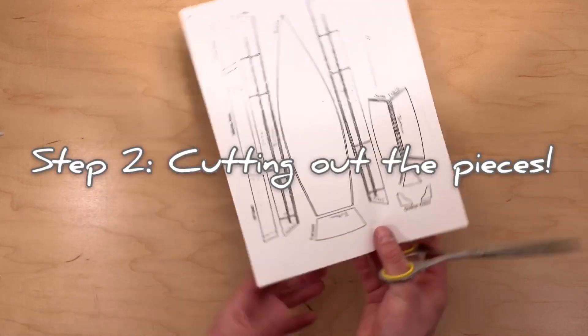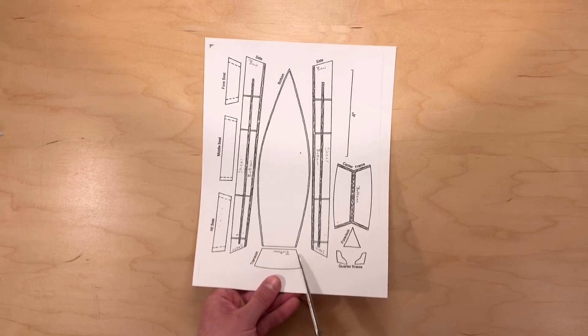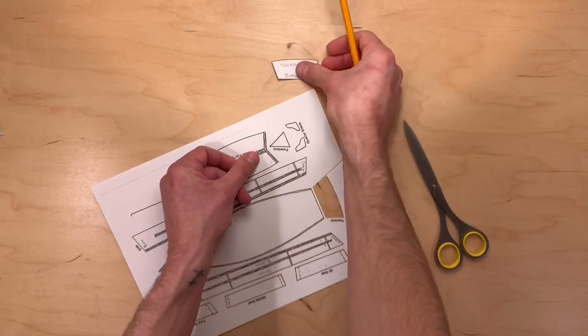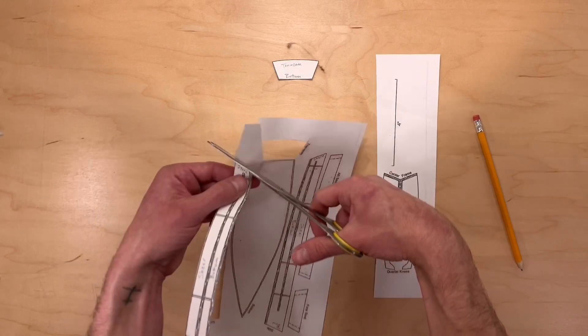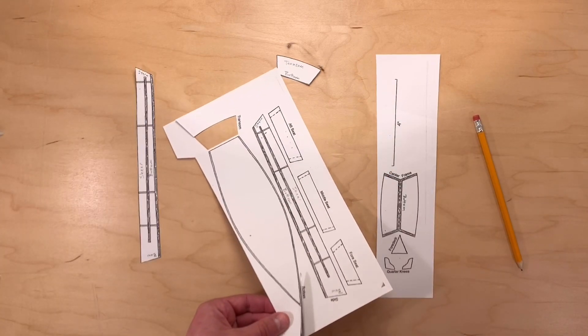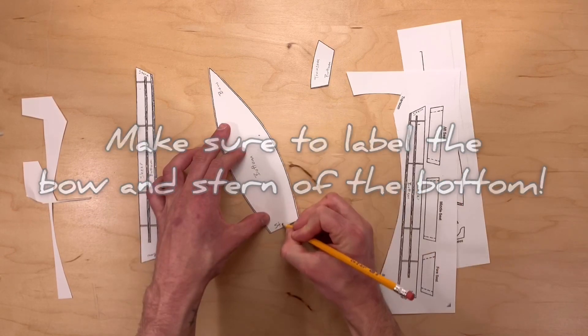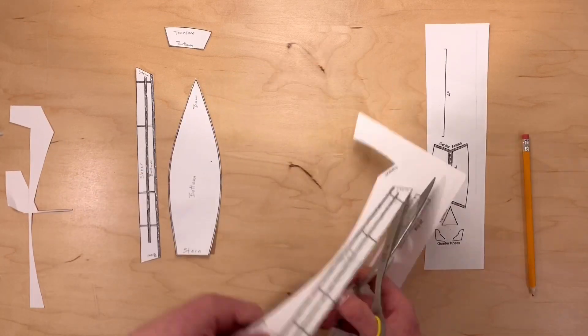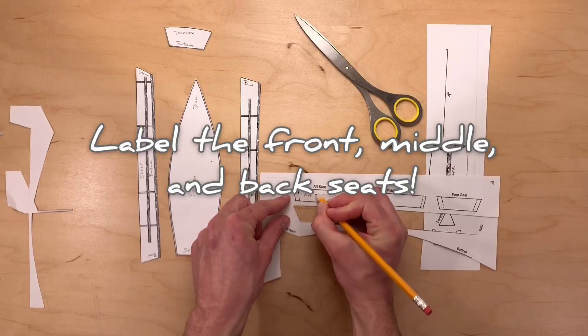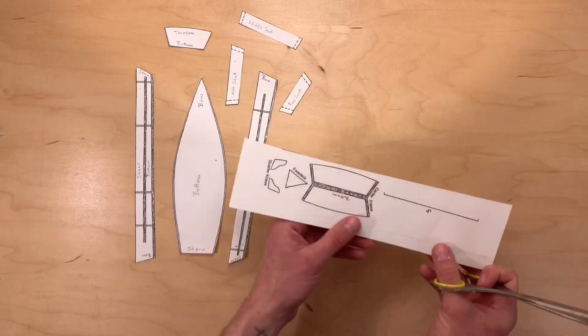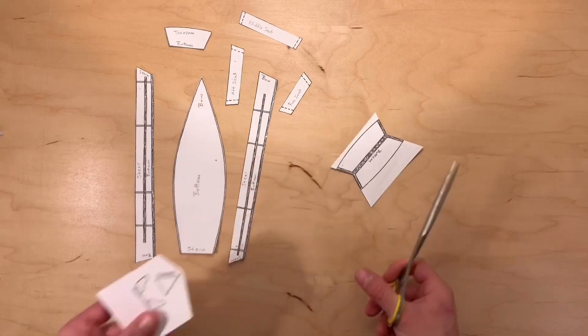Once the pieces are labeled, the next step is to cut them out. In boat building or in any woodworking project, there's the old adage to measure twice and cut once. This is because if we measure incorrectly and make the wrong cut, we might accidentally take off too much wood and we can't put wood back. The same could be said for cutting out our cardstock pieces. Make sure to cut just a little bit outside the line so that we can trim it down if we need to.